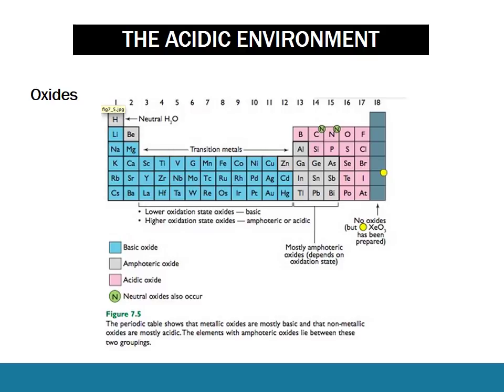There's a dot point about oxides. It's important you can quickly rattle off some examples of acidic oxides and some basic oxides. Non-metals typically form acidic oxides, whereas metals typically form basic oxides. The most common examples of acidic oxides are things like sulfur trioxide and carbon dioxide. An oxide isn't in and of itself acidic, but it is an acidic oxide because when it reacts with water, it forms an acid. As you can see in the equation, when you mix sulfur trioxide with H₂O, it forms H₂SO₄, which is sulfuric acid.